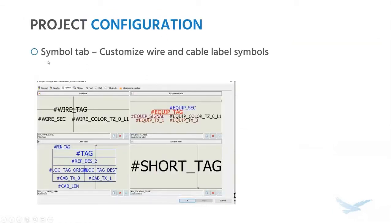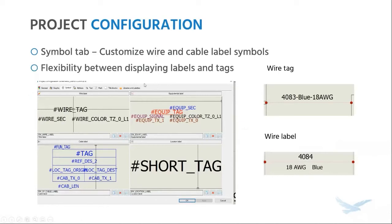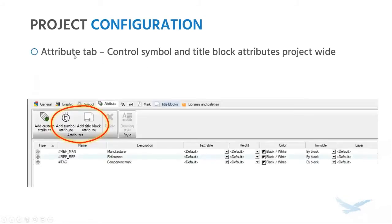Moving to a different tab — the symbol tab — this is a pretty underrated tab, and you can use it to customize wire and cable label symbols. You can either display the wire tag or the wire label. The wire tag is a single entity based off a formula, and that formula could have many variables driving it. If it's a really large formula and you end up with a massive tag on a short piece of wire, that may not look the greatest. So you can opt for a wire label style of display, where all the attributes are laid out around the wire. Depending on the situation, one might give you a cleaner look than the other.